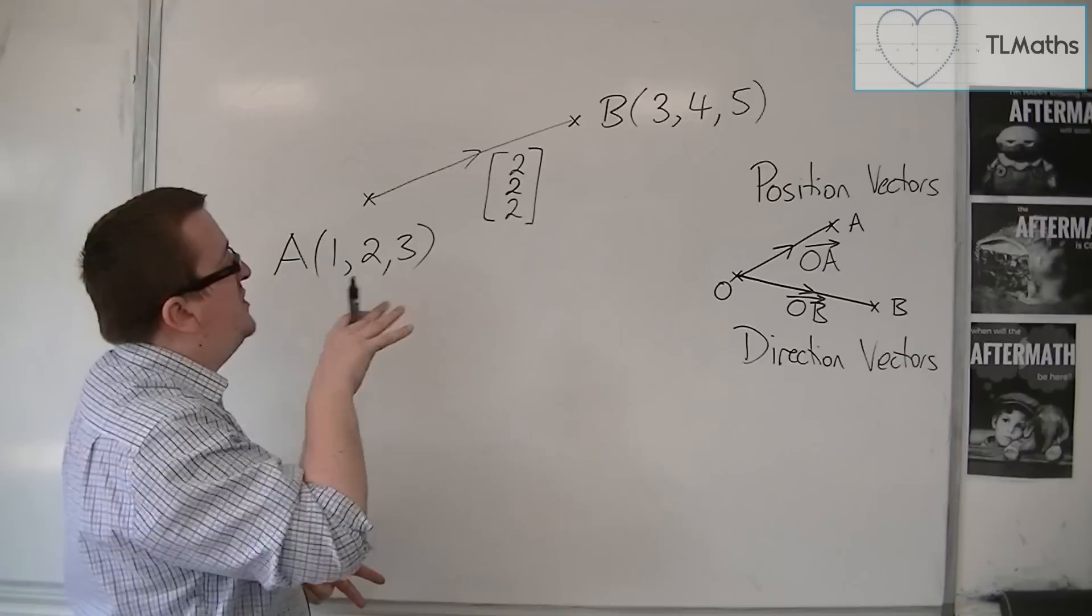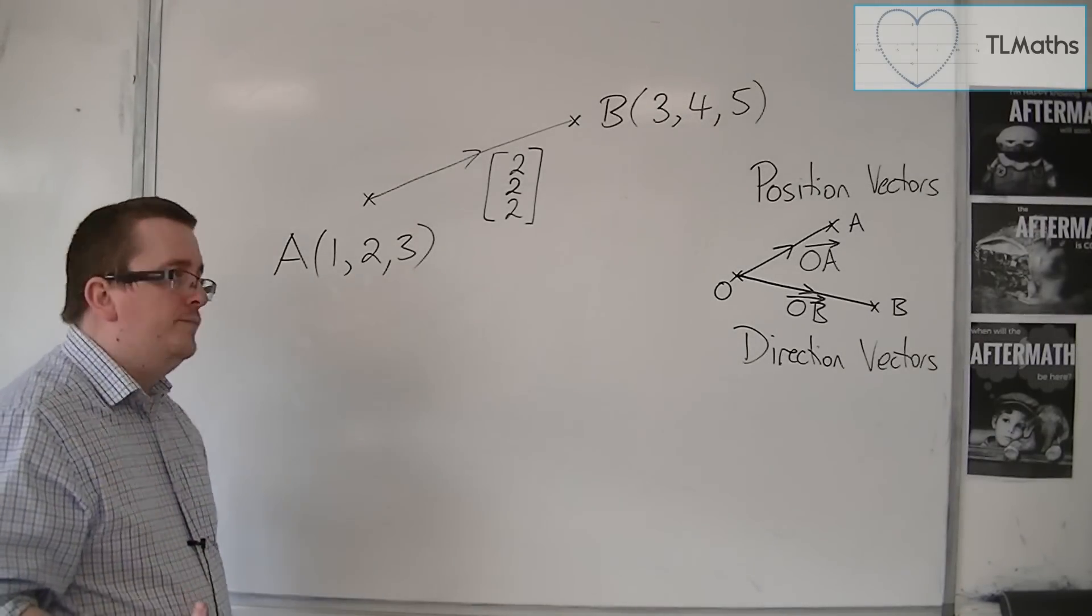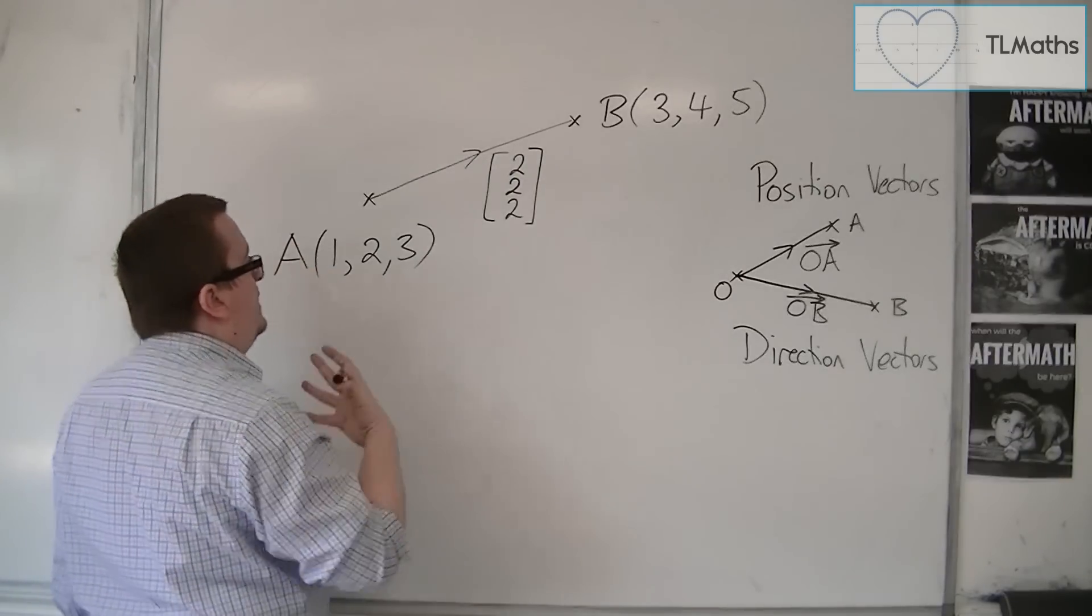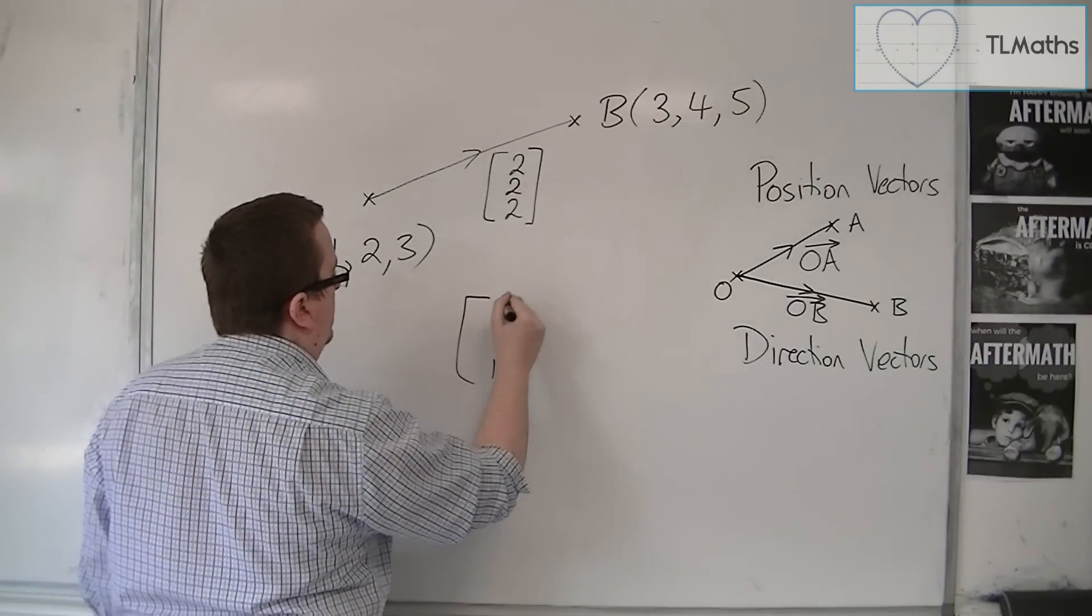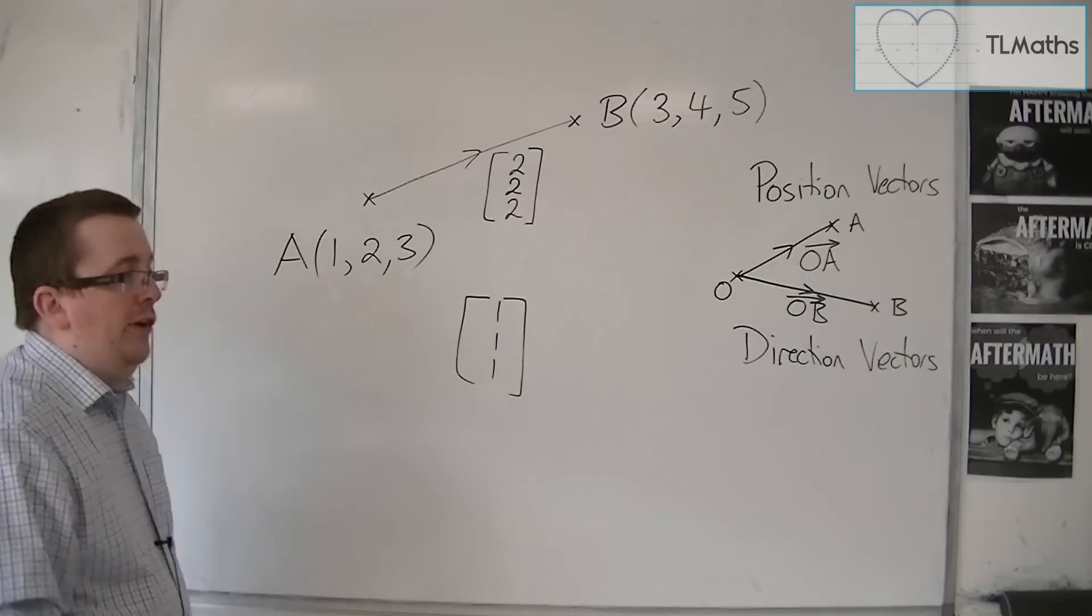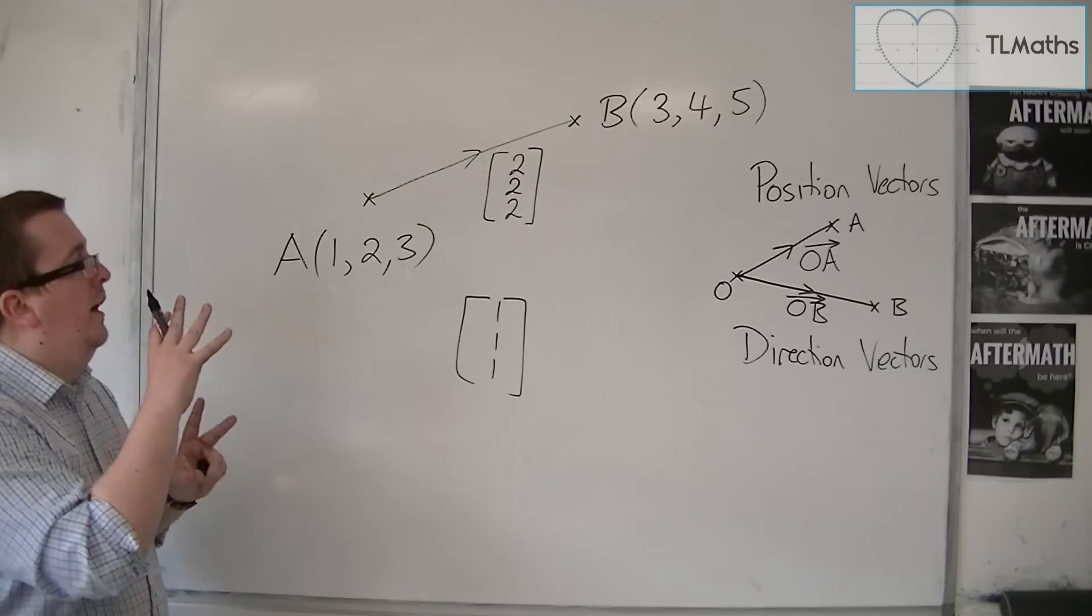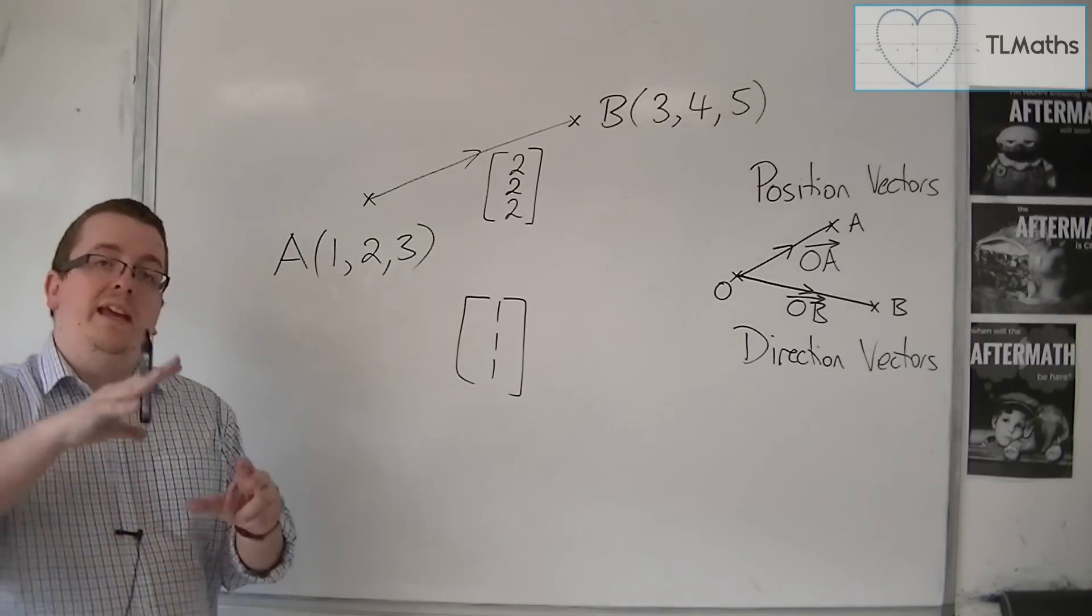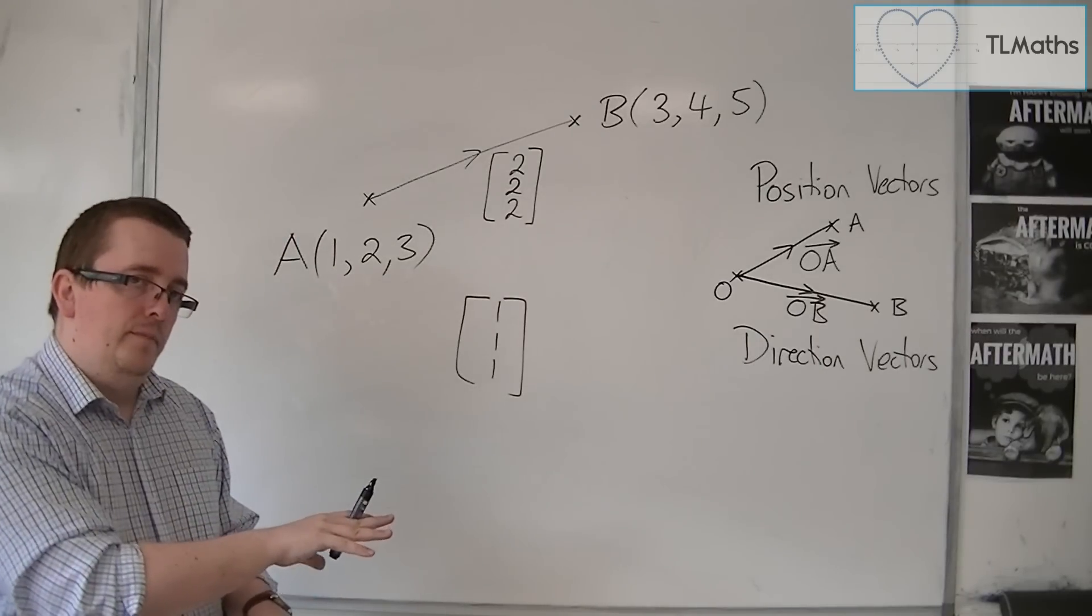So you could consider 2, 2, 2 in this case to be a direction vector. However, the vector 1, 1, 1 is also telling me how to get from A to B. It doesn't tell me how to get all the way from A to B, but it tells me in which direction I need to be travelling.